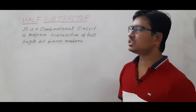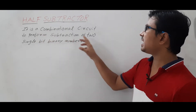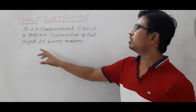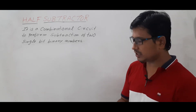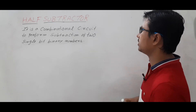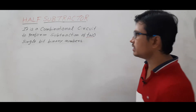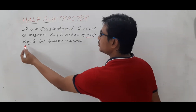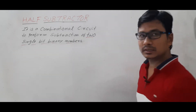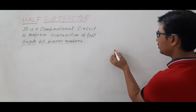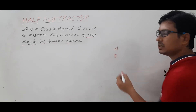A half subtractor is a combinational circuit to perform subtraction of two single-bit binary numbers. This is a very important point — it can perform subtraction of only two single-bit binary numbers.